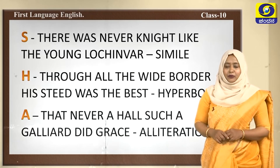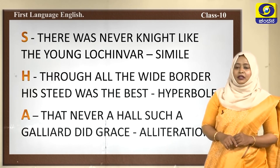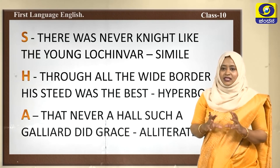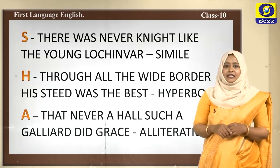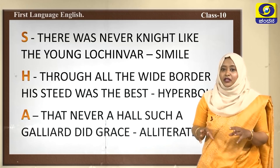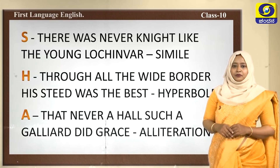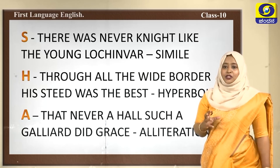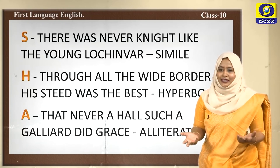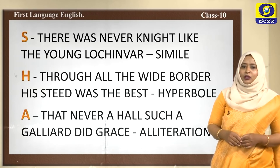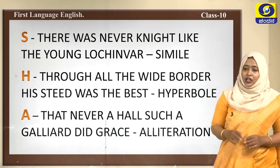The first figure of speech is simile — a comparison using 'like' or 'as,' for example 'she is as white as milk.' From the poem: 'There was never a knight like the young Lochinvar' — Lochinvar is compared to other knights who have not been as young and courageous as him. The next one is hyperbole, which means exaggeration. For example: 'I am so hungry I could eat a whole horse.' From the poem: 'Through all the wide border his steed was the best' — claiming he was the best across all borders of Scotland.